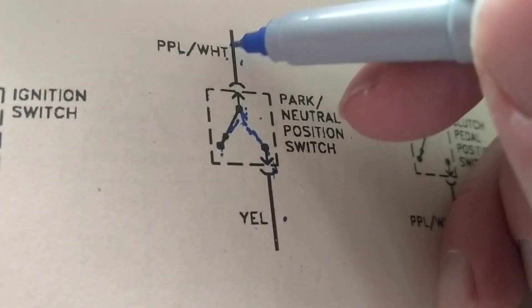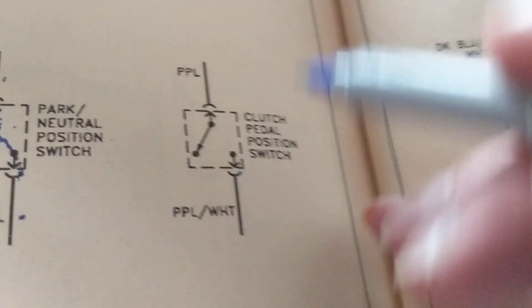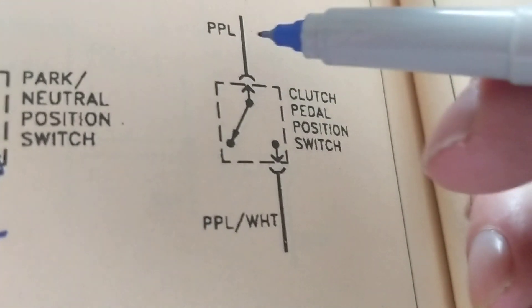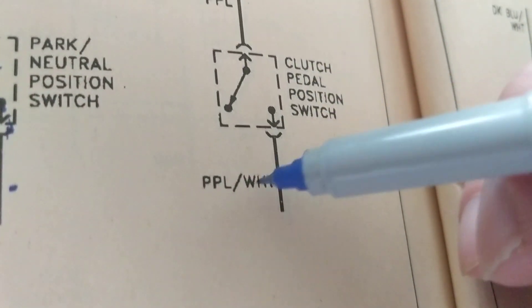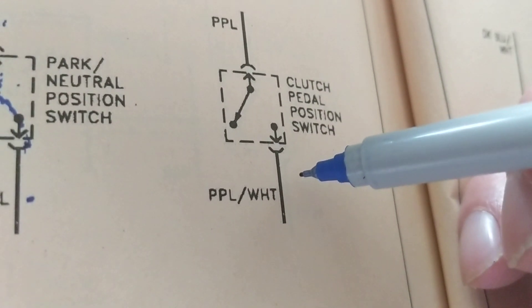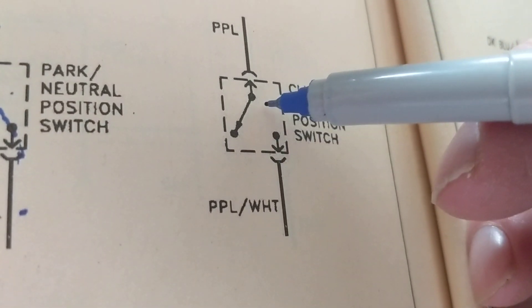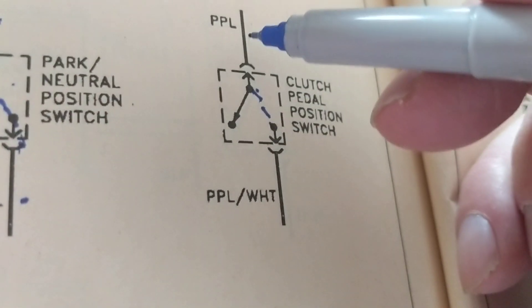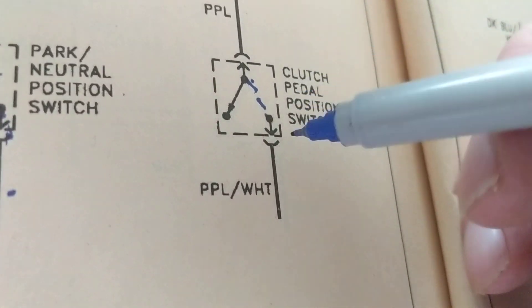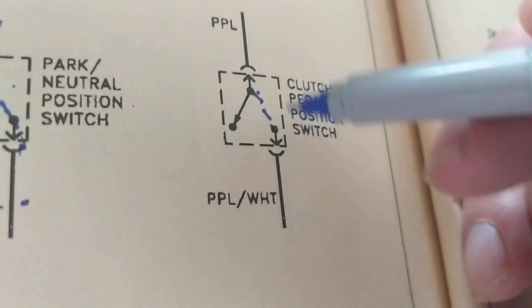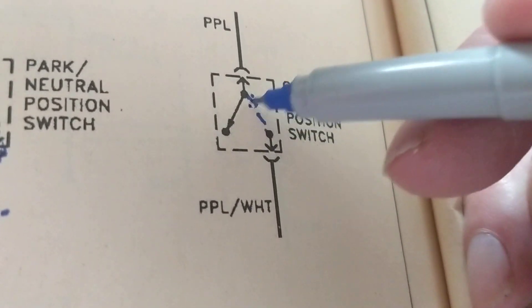Then you toggle this and you'll make a connection from here to here. Let's try another one. In this rest position, is the purple wire connected to the purple and white striped wire? Your answer should be no, it is open. When I activate it, is the purple wire connected to the purple and white striped wire? Your answer should be yes — you will toggle it and now you're connected.